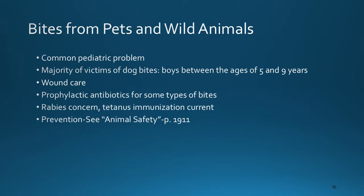Bites from pets and wild animals are common pediatric problems. The majority of victims of dog bites are boys between the ages of five and nine years. The wound should be irrigated with copious amounts of saline or lactated Ringer's, and the surrounding skin washed with mild soap. Prophylactic antibiotics may be given, and there is concern about rabies or tetanus, so medical attention should be sought. Children should be taught to avoid strange, dangerous, and nervous animals; not to tease or mistreat pets; to avoid direct eye contact with a threatening dog; and never to hold their face close to an animal or disturb an animal that is eating, sleeping, or caring for young.